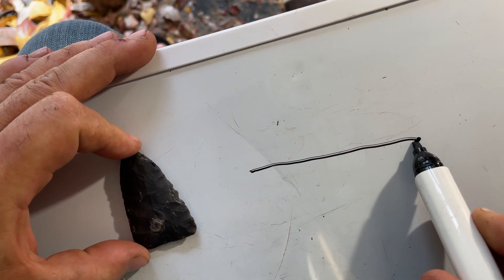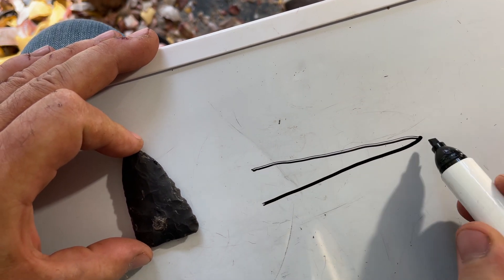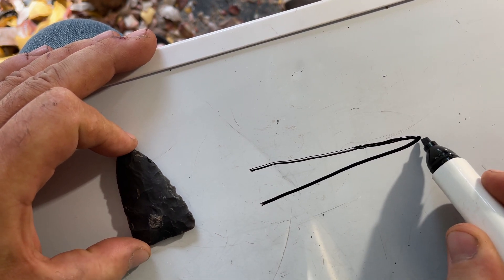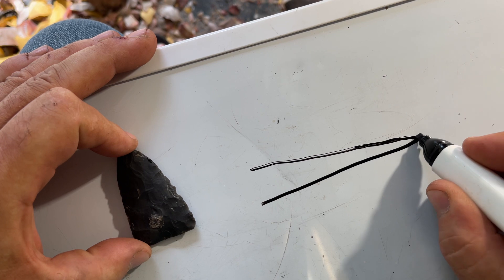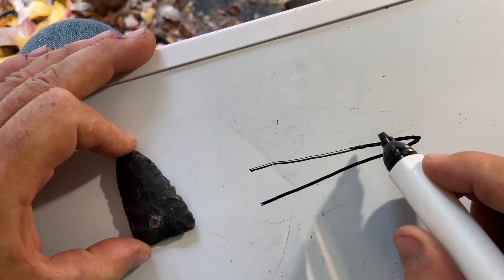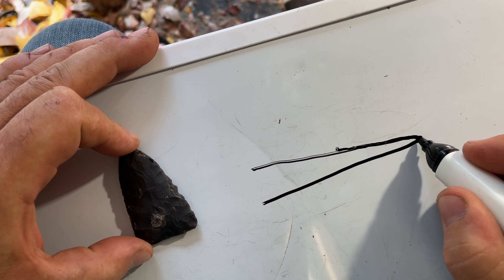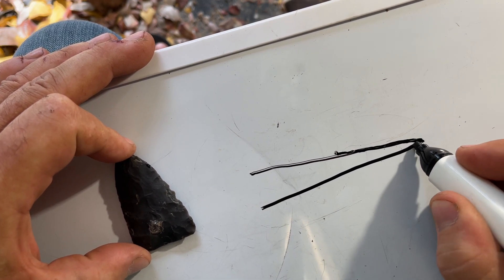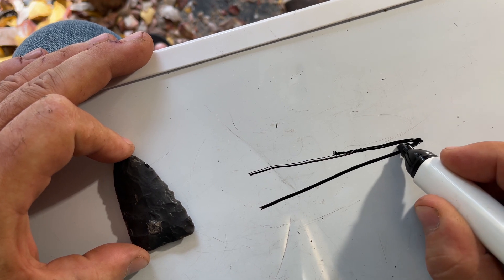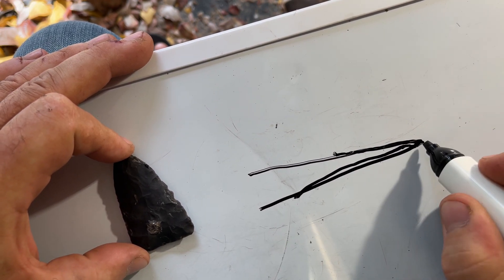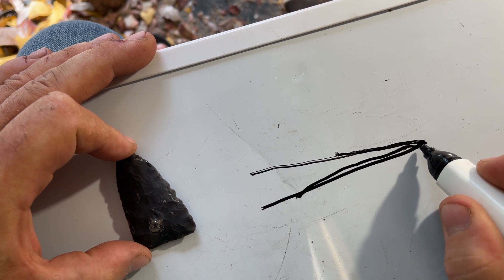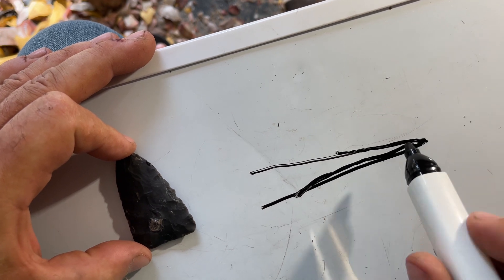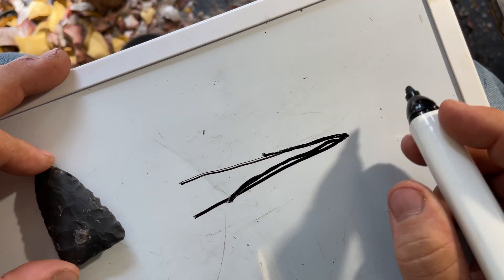If you're trying to take a flake from a really thin edge, there's a lot that has to happen for that flake to be successful. It's just hard for that to happen when it's really thin — the flake has to go in there and form the bulb of percussion and then run out. It can be done, there are people a lot better than I am at flaking thin edges, but it's much easier if you have a little bit of thickness.